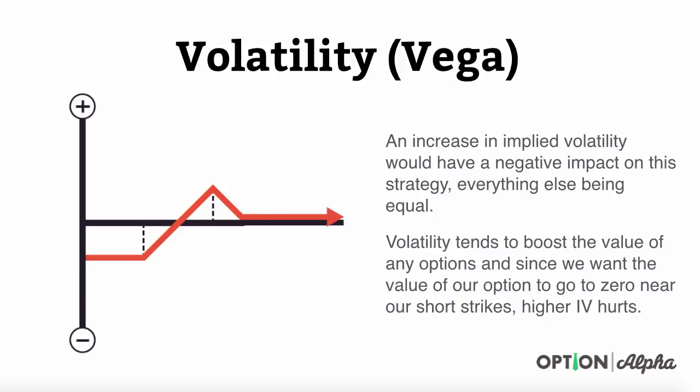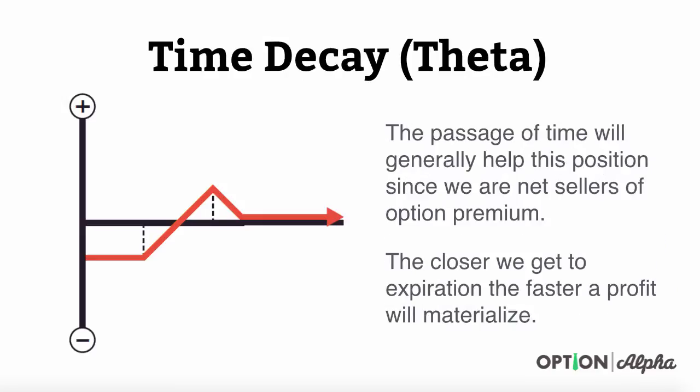As far as volatility, an increase in implied volatility would have a negative impact on this strategy because we are net sellers of options. We're selling two options right out of the money, so we want to see implied volatility go down. This is why it's a strategy you should use during high implied volatility markets. Time decay is also going to help this position because we're net premium sellers. We want to see this thing decay — the quicker it decays, the faster your profit will materialize.